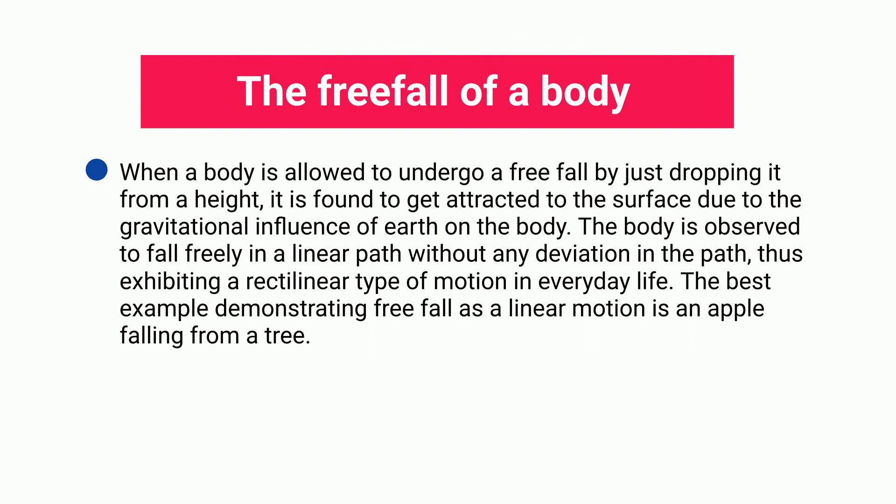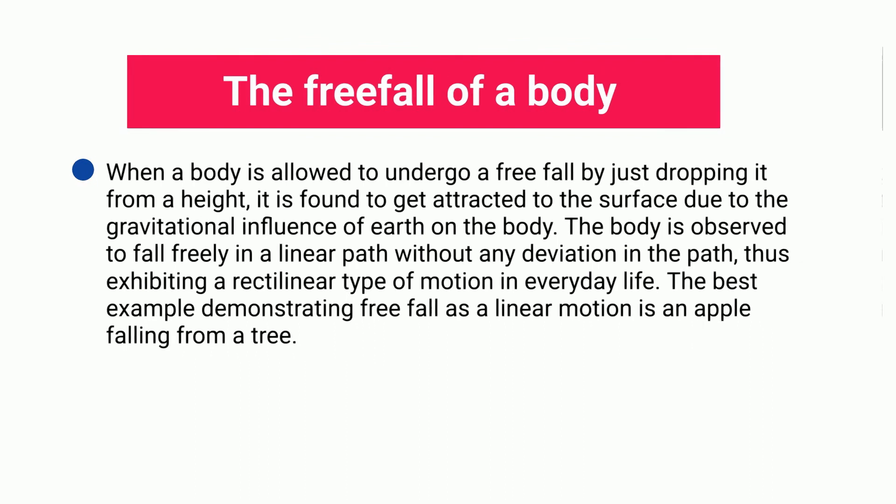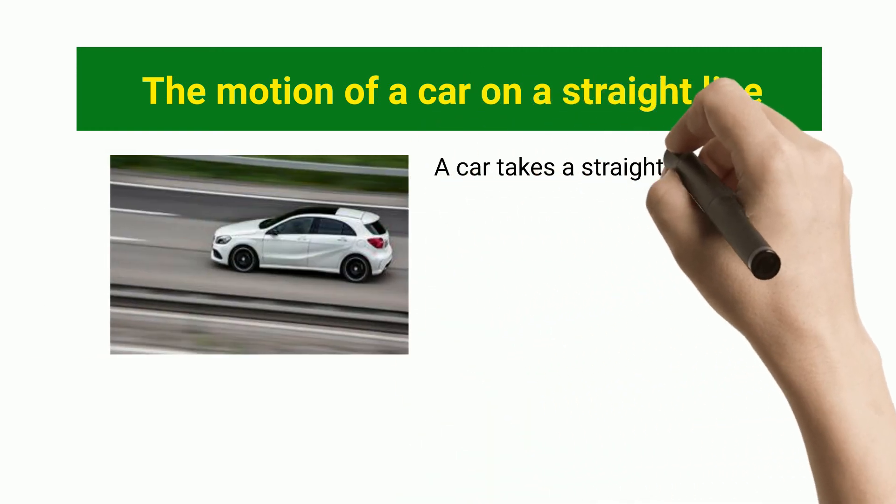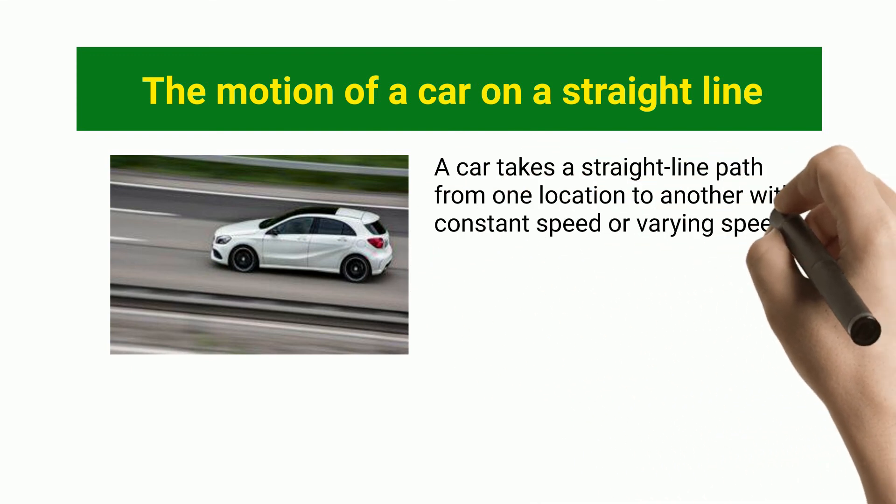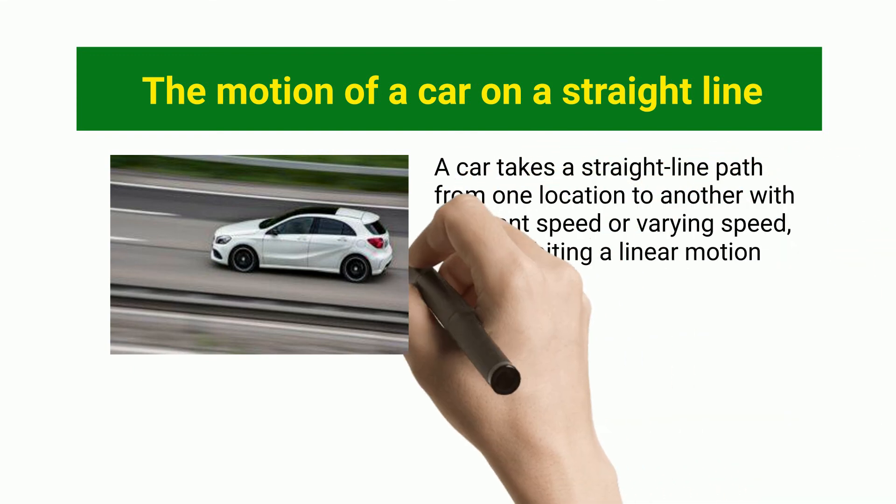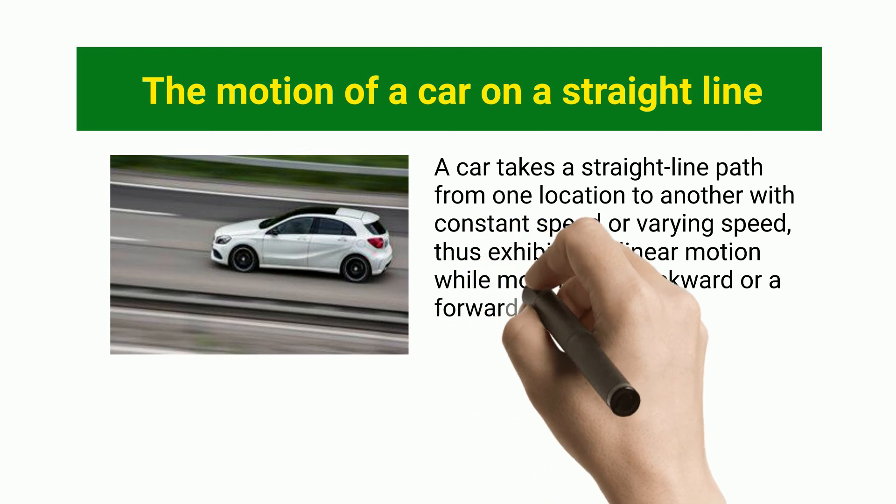The motion of a car on a straight line: a car takes a straight line path from one location to another with constant speed or varying speed, thus exhibiting a linear motion while moving in a backward or forward direction on the road.